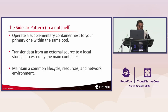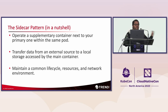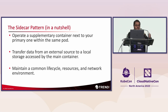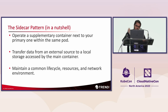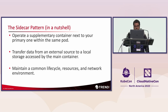In a nutshell, this sidecar pattern operates supplement containers next to the primary one within the same pod. They can transfer data from an external source to local storage, and they maintain a common lifecycle, resources, and network environment. In Kubernetes version 1.28, there are some changes now with sidecar containers — they're kind of built-in.